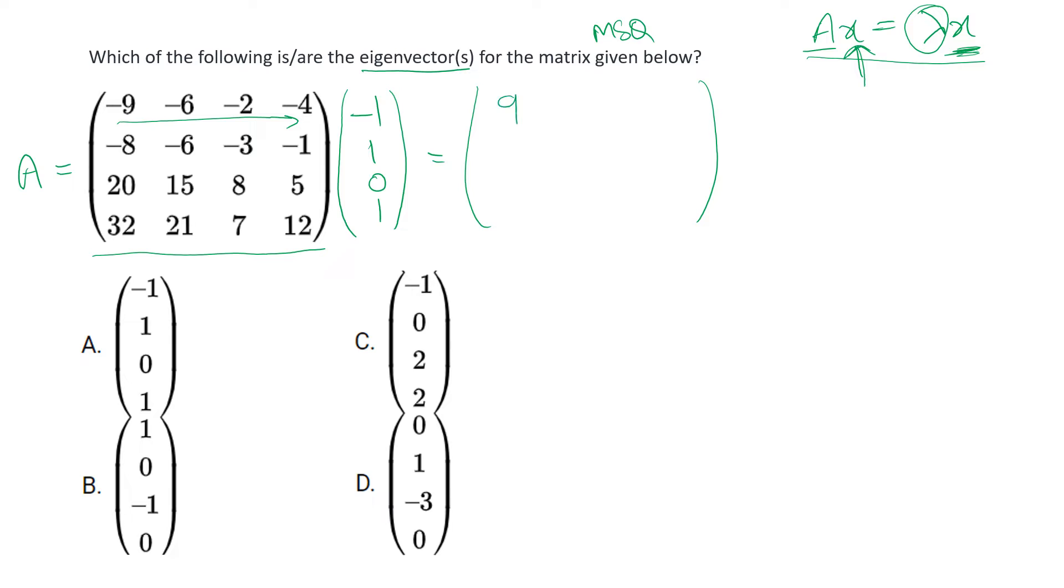The third element is zero so this will be ignored. The product will be minus nine minus six and minus four for the first row. For the second one it will be eight minus six minus one. Then minus twenty plus fifteen plus five, and lastly it will be minus thirty two plus twenty one plus twelve.